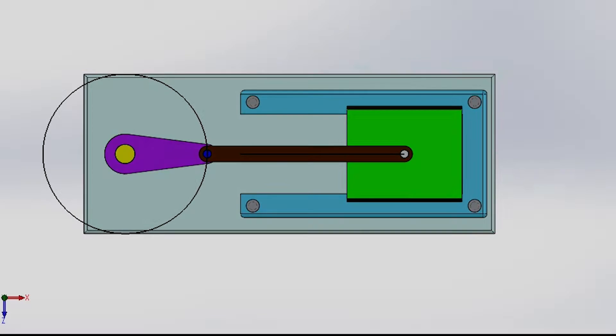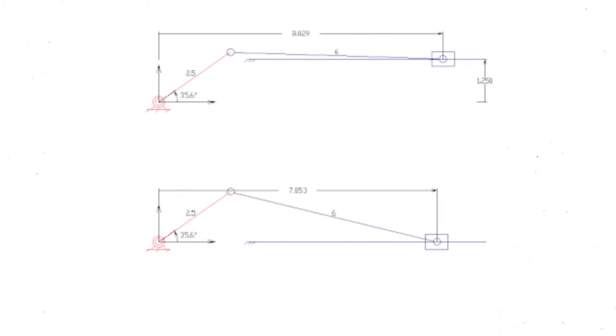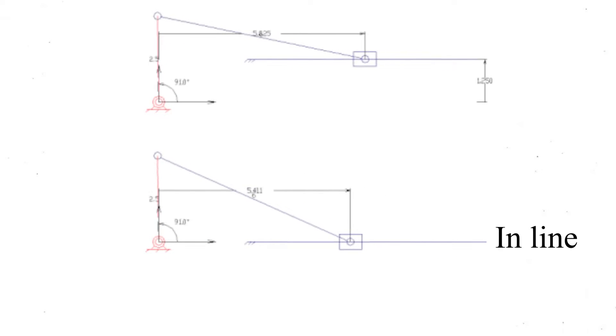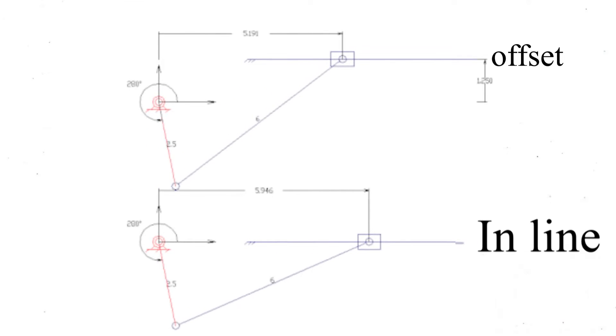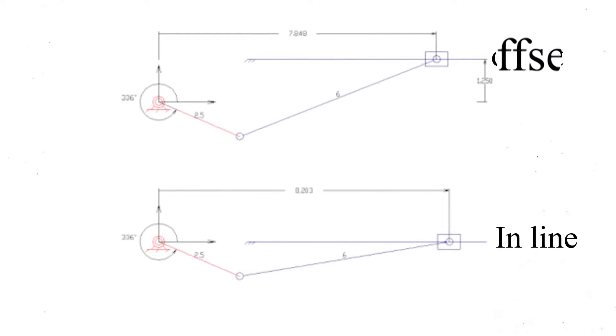There are two main types of this mechanism: inline and offset ones. When the crank and the slider are positioned in the same line, we call it an inline structure. Otherwise, it is an offset one.